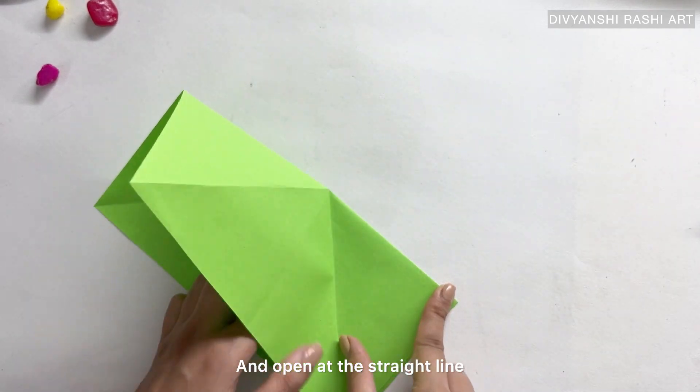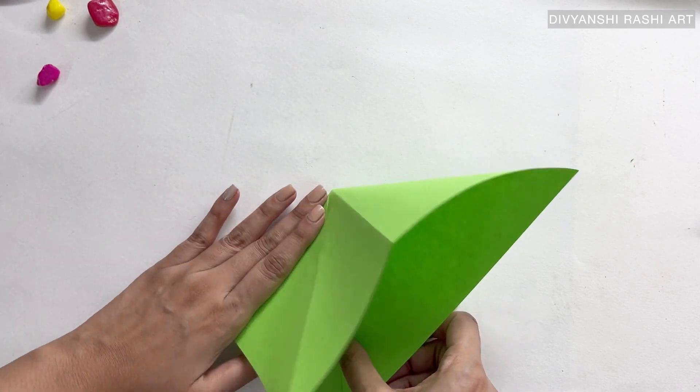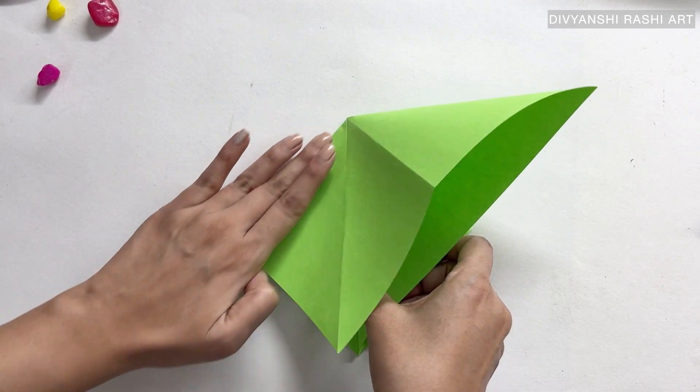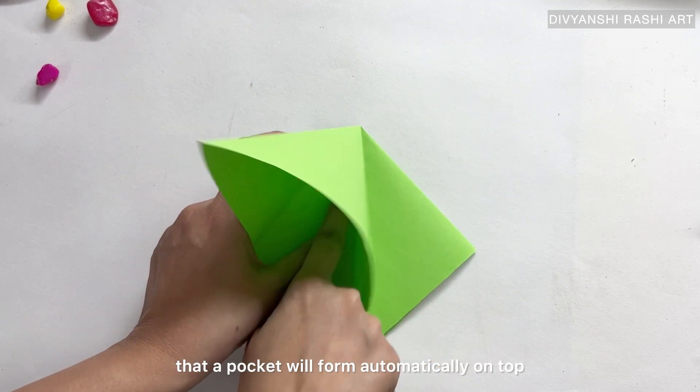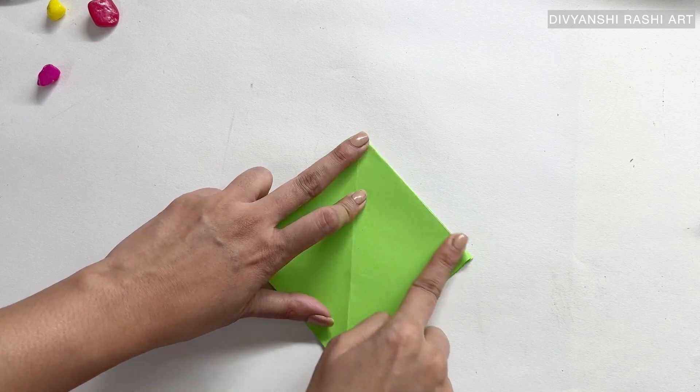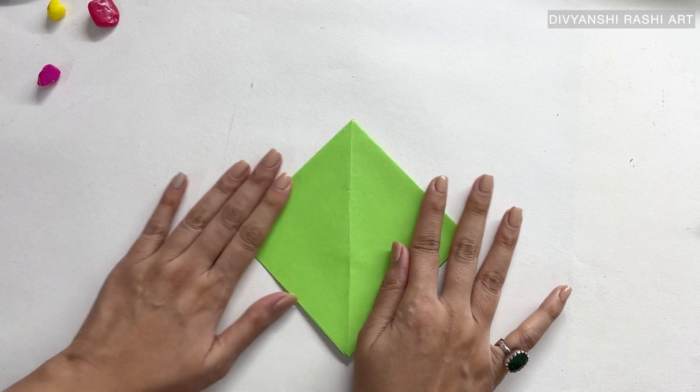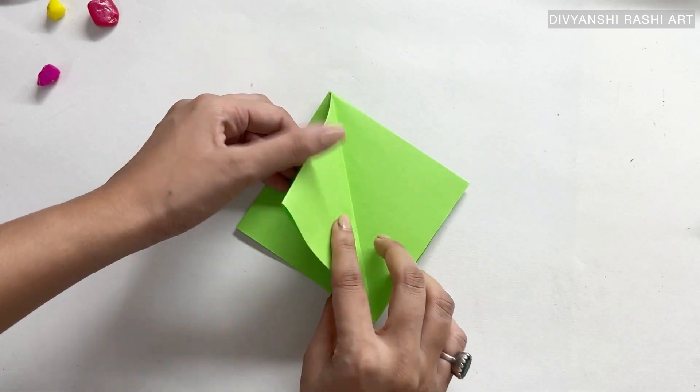And open at the straight line. Repeat the same on the left diagonal and you will see that a pocket will form automatically on top. If your paper looks like this and has four flaps, then it's right. Now, this part was the only tricky part of the entire process.